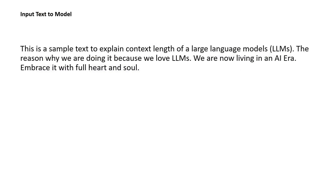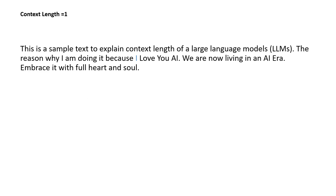The secret sauce of increasing this context length is all about something called RoPE theta, but let me try to explain it very simply and also show you the pseudo code. Let's suppose this is a simple raw text paragraph being input to a model. Initially the context length of the model is just one, meaning the model can pay attention to only one word or token at a time. If the context length is two, the model can remember or read two tokens at one time.